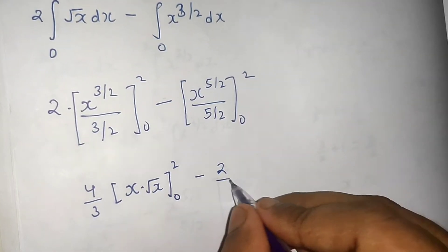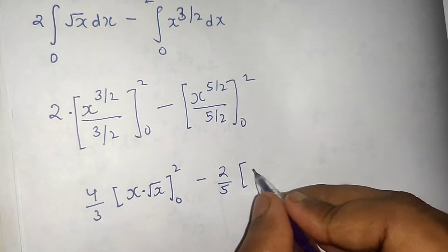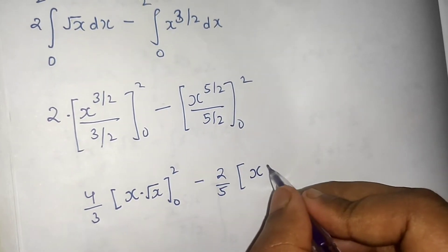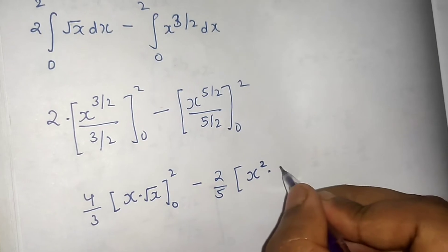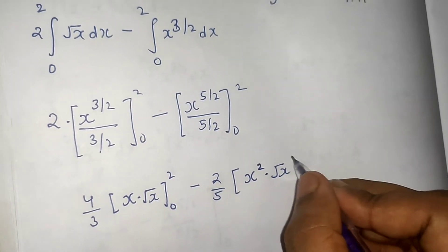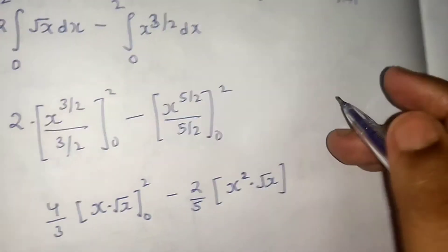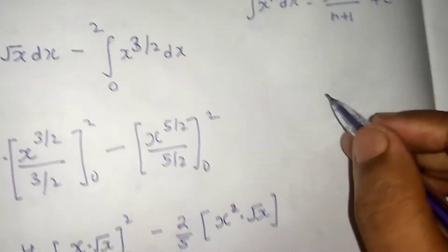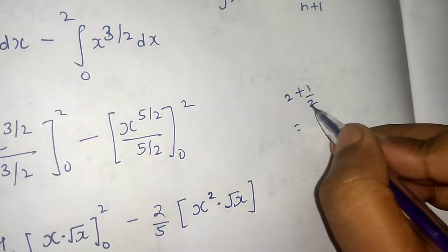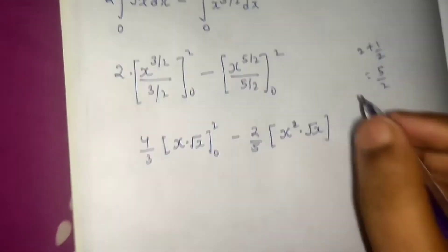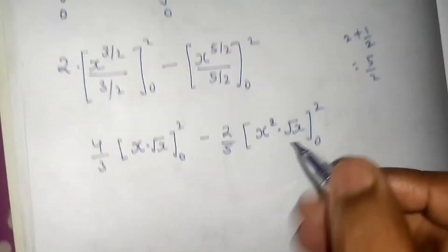Minus, this is 2 by 5 outside and this can be written as x square into root x. You can also write x power 5 by 2. Later on we will simplify, but this is also fine because 2 plus 1 by 2 power will again give you 5 by 2. This goes again from 0 to 2.